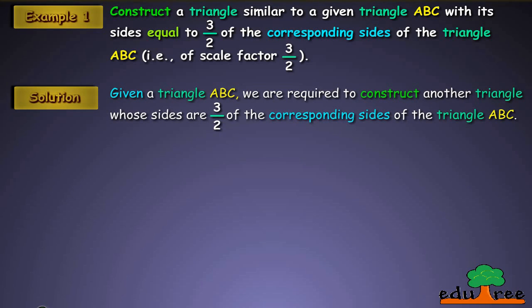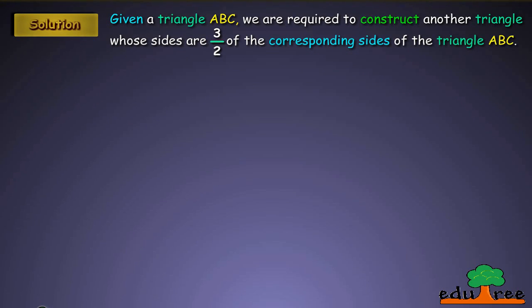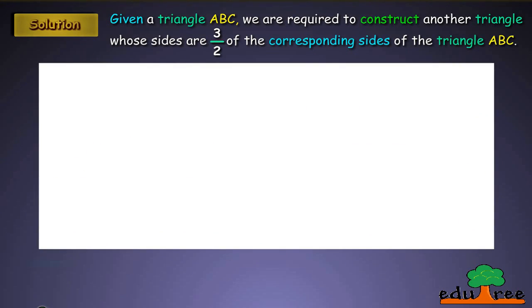Solution. Given a triangle ABC, we are required to construct another triangle whose sides are 3/2 of the corresponding sides of the triangle ABC. Given a triangle ABC.